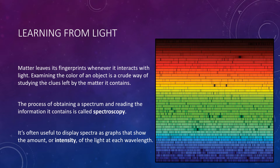The process of obtaining a spectrum and reading the information it contains is called spectroscopy. If you project a spectrum produced by a prism onto a wall, it will look like a rainbow, at least for visible light. However, it's often more useful to display spectra as graphs that show the amount or intensity of the light at each wavelength. So although it's nice to look at a rainbow image, it doesn't tell us as much information, so instead we put it into an x and y graph.